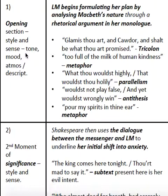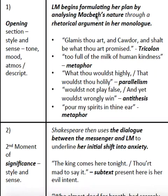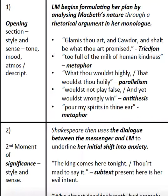If you look at all the examples — tricolon, metaphor, parallelism, antithesis, and metaphor again — all of these features are all an element of rhetorical argument. So this particular type of language is an element of Shakespeare's style; it is one of his writer's choices. And this sentence is broad enough to give me a chance to talk about all of these different features.